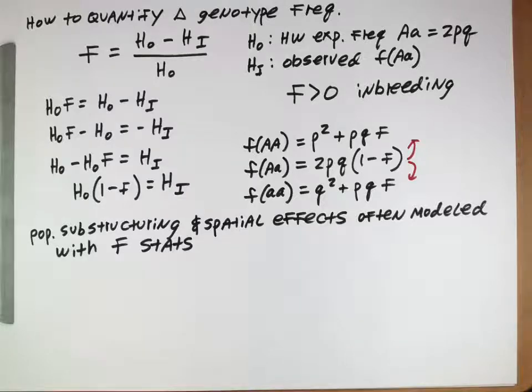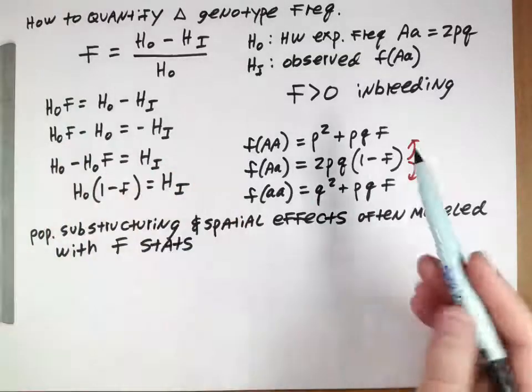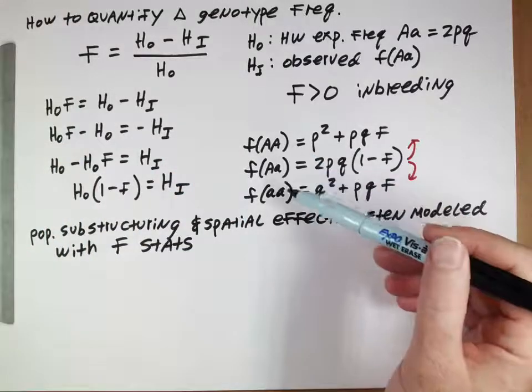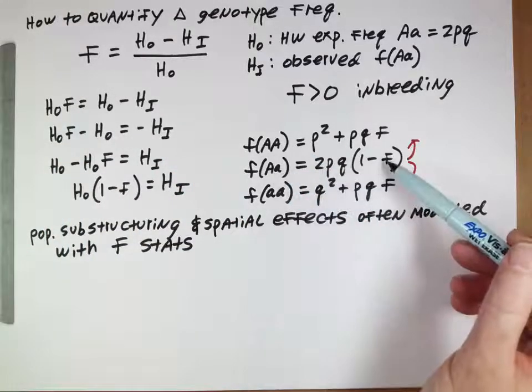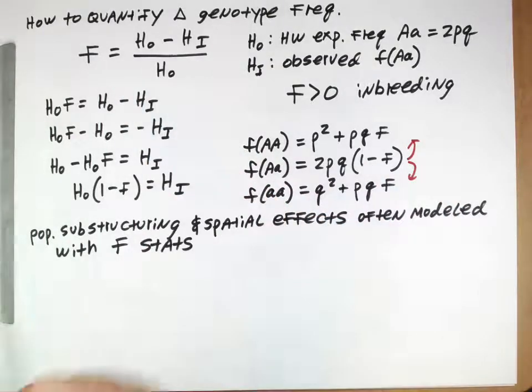Population substructuring and spatial effects are often modeled with F-statistics. If you're a conservation manager and you're interested in the degree of inbreeding in your population arising from habitat fragmentation, you would use F-statistics because you can measure this and this and this. Then you can calculate F and see what sort of inbreeding is being caused by habitat fragmentation or isolation of certain areas.